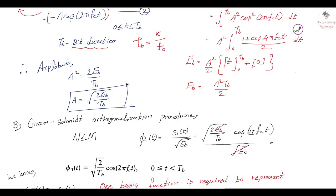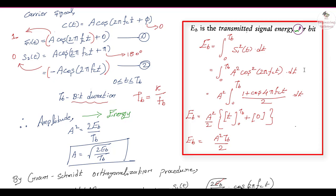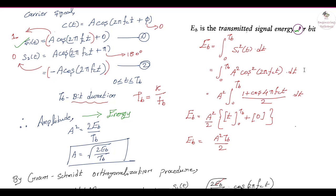In digital modulation, amplitude is represented in terms of energy. The energy per bit Eb is given as the integral from 0 to Tb of s1²(t) dt. Substituting s1(t) = A·cos(2πfc·t), we get A²·cos²(2πfc·t) dt. Taking A² outside and applying the identity cos²θ = (1 + cos2θ)/2, we get (1 + cos(4πfc·t))/2.